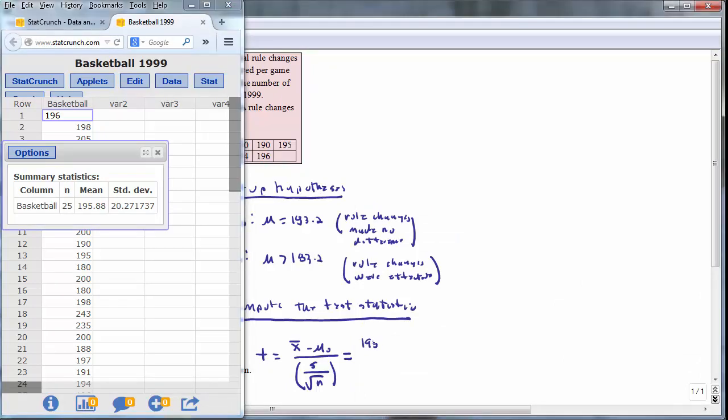The sample mean is 195.88. We want to subtract off the null hypothesis mean, the baseline value of 183.2, divided by the sample standard deviation of 20.27173, divided by the square root of sample size, square root of 25. Evaluate this expression on a calculator. This would evaluate to 3.12750. The test statistic that we have computed is a measure of the distance between the sample mean and the null hypothesis value. So in this case, that distance is a little bit more than 3 standard deviations, which is a pretty good-sized distance.